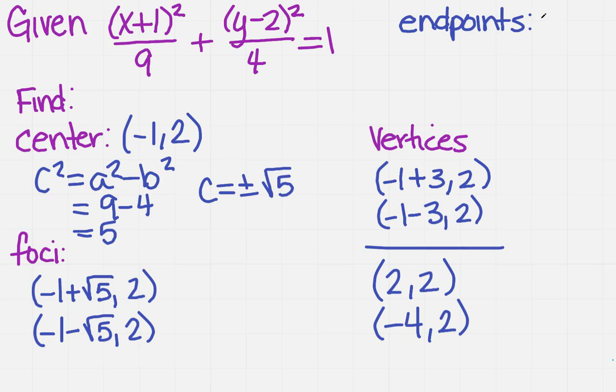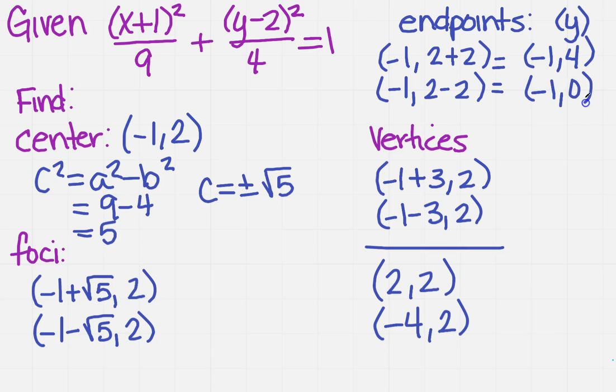Now, remember, your endpoints are in relation to y. So if they're in relation to y, that means I'm going to have to use my b value, which is 2, and I'm going to have to take, from the center, I'm going to take minus 1, and I'm going to do 2 plus 2. And I'm going to take another x value, and then I'm going to do 2 minus 2. So this would then simplify to minus 1 comma 4 and minus 1 comma 0.